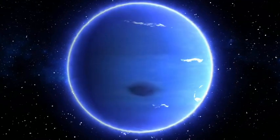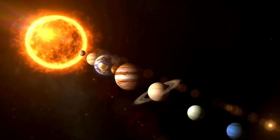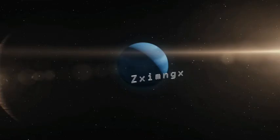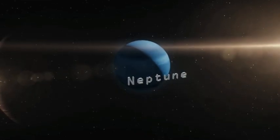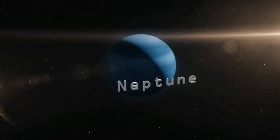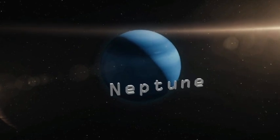Neptune is the eighth planet of the solar system and the farthest planet from the Sun, but it is not the coldest planet. This blue gas giant of the solar system is significantly larger than Earth and has 17 times the mass of Earth.